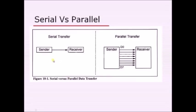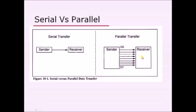In serial communication, a sender and receiver are connected with one channel, where the sender always sends data and the receiver always receives data through that single channel. In parallel communication, between the sender and receiver, there are multiple channels carrying multiple data bits at the same time. With eight channels, eight data bits are transferred simultaneously.